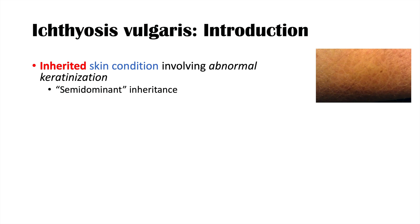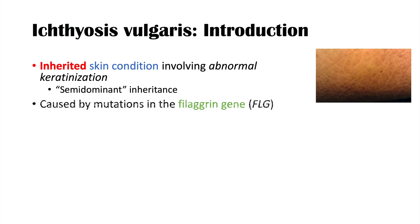With regards to the inheritance component, we call it semi-dominant inheritance. It can be more prominent in some individuals than others, and it is an autosomal dominant trait, but it doesn't act completely like an autosomal dominant condition. It is caused by mutations in the filagrin gene — FLG — which encodes for the protein profilagrin.